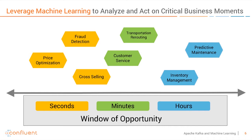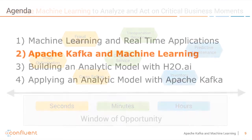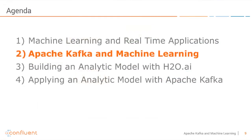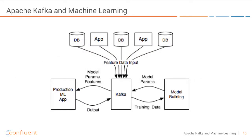So here you see many use cases which you already implement in your industry, but with machine learning you can make them much more powerful. Let's now think about how Apache Kafka is related to all these use cases and machine learning — and this is what you really see at many customers already. Here is a very general overview.